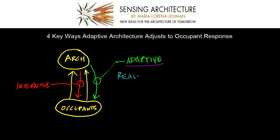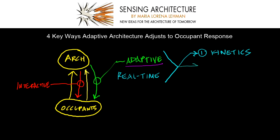The first way is through kinetics. Architecture in this way can adjust physically as its pieces and parts — its featured elements — can move through space to interact with its surroundings, like nature, to respond to occupant need.